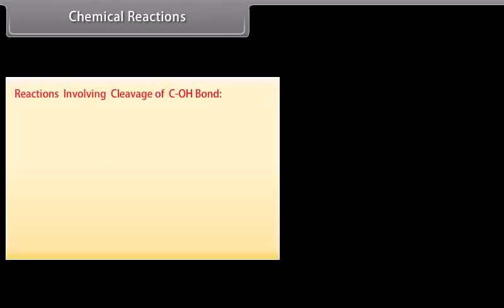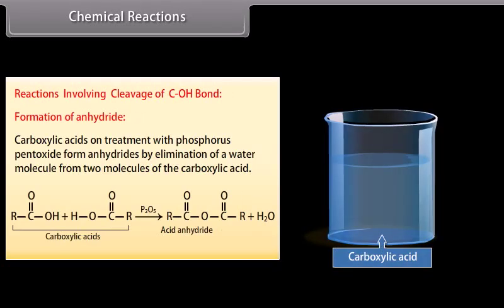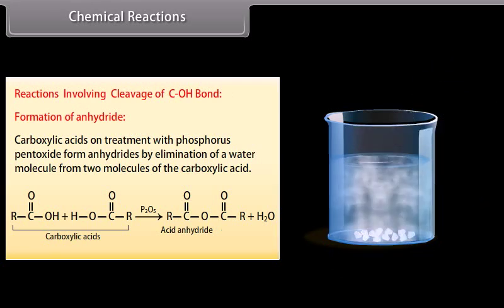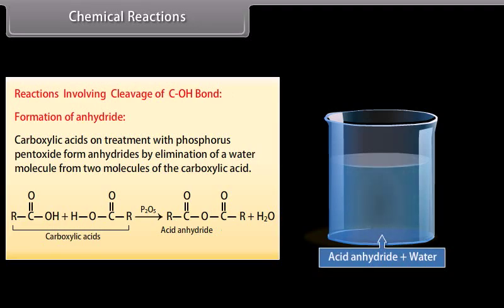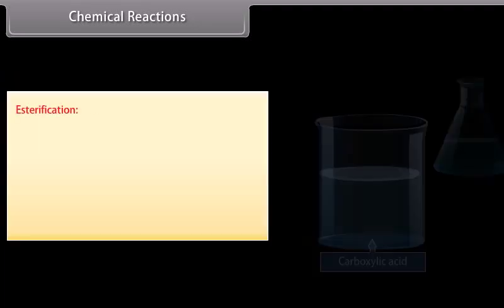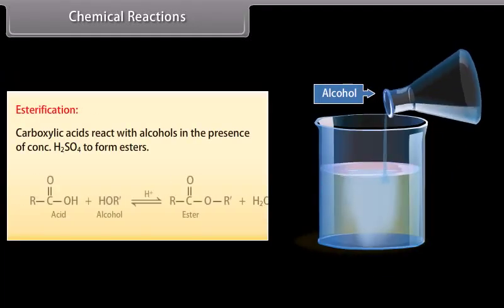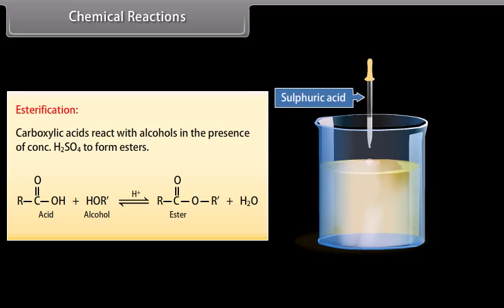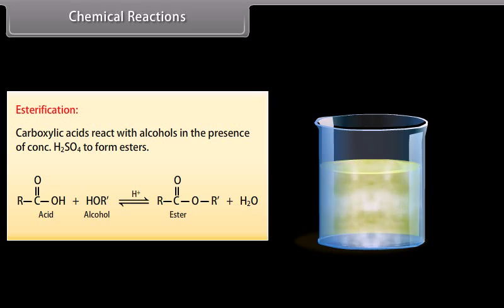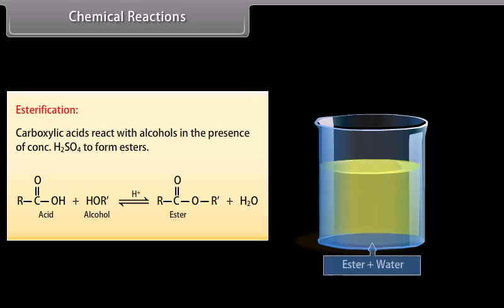Reactions involving cleavage of C-OH bond. Formation of anhydride: carboxylic acids on treatment with phosphorus pentoxide form anhydrides by elimination of a water molecule from two molecules of the carboxylic acid. Esterification: carboxylic acids react with alcohols in the presence of concentrated sulfuric acid to form esters.